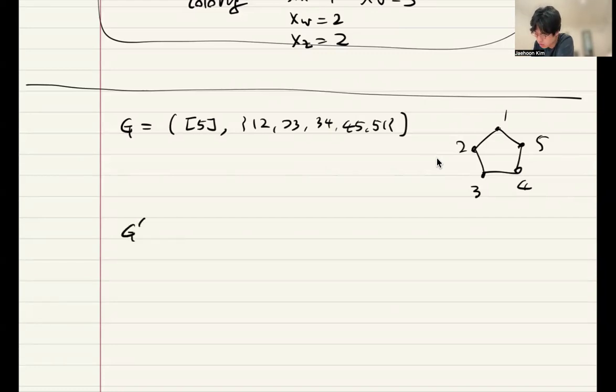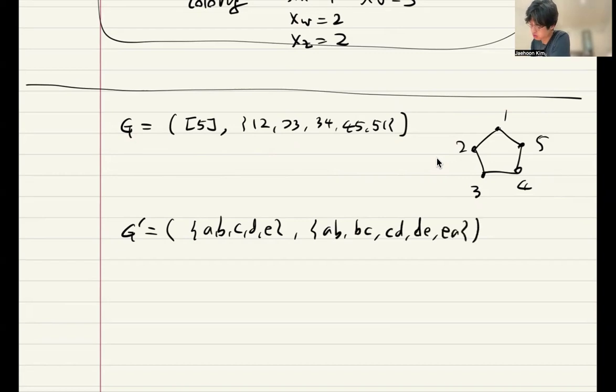Anyway, we can consider this and then we consider G prime, which are a, b, c, d, e, five vertices. And edges are this. How does it look like? A, b, c, d, e.